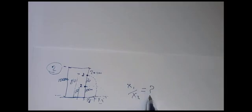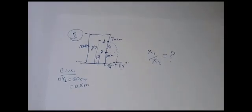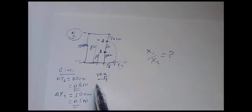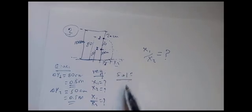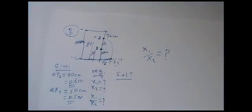What is the ratio of x1 to x2? Given: change in y1 = 80 centimeters = 0.8 meters, and change in y2 = 50 centimeters = 0.5 meters. We need to find x1 and x2 individually, then compute their ratio. The approach is horizontal projectile motion applied to fluid flow.